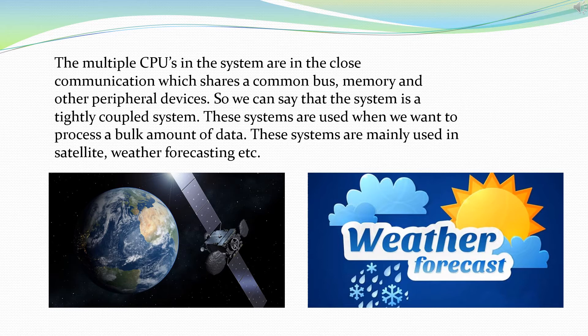The multiple CPUs in the system are in close communication, sharing a common bus, memory, and other peripheral devices, so we can say that the system is a tightly coupled system. These systems are used when we want to process a bulk amount of data and are mainly used in satellite, weather forecasting, etc.